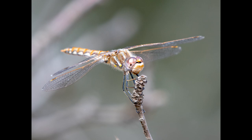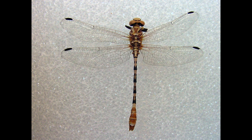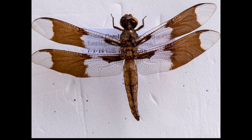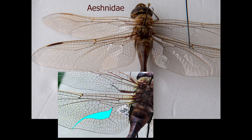Look at the eyes first and ask yourself: do the eyes touch on top? If they do touch, it's not a Gomphidae — if they didn't touch, that would be a Gomphidae. Next, look at the second pair of wings — the hindwings, which are more posterior. The family Libellulidae has what's called a boot vein, which looks like tracing a little stocking in the shape of an L for Libellulidae. The Aeshnidae does not have a boot vein.